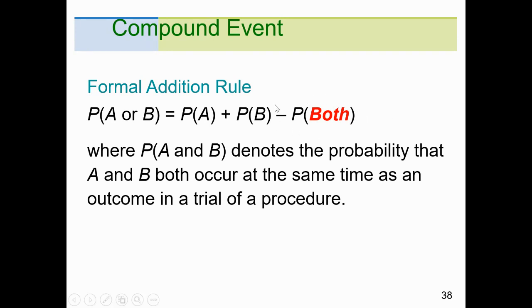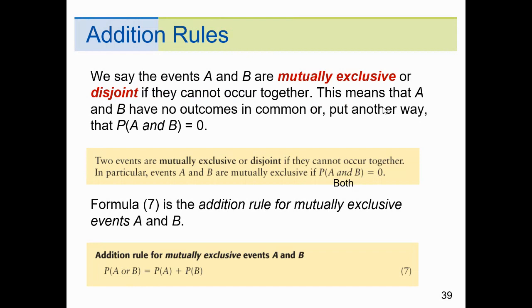Sometimes things cannot happen at the same time, so there is no subtraction necessary. Events A and B are mutually exclusive, or disjoint, if they cannot occur at the same time — for example, I can't be on a plane going to Chicago and on a boat going to Brazil at the same time. This means A and B have no common outcomes, so P(A and B) = 0. When events are mutually exclusive, you simply add P(A) + P(B) — no double counting to worry about.